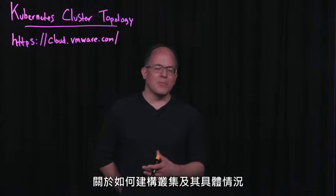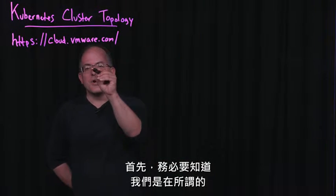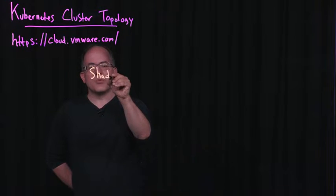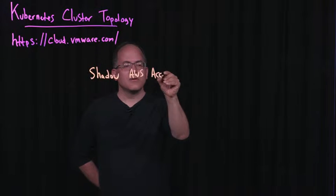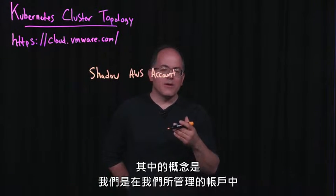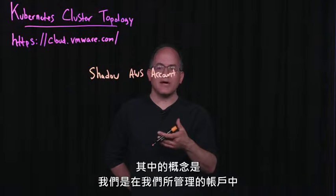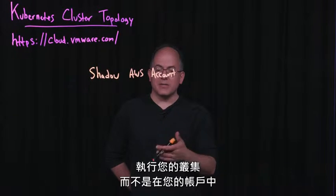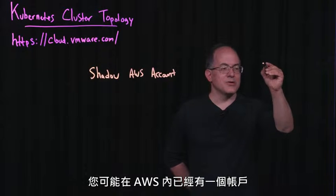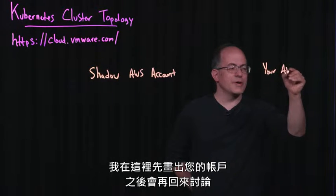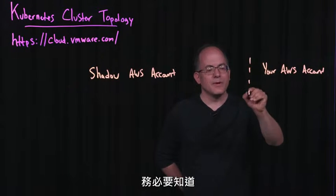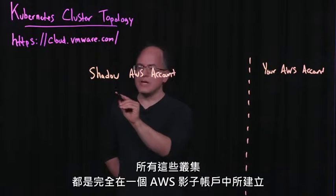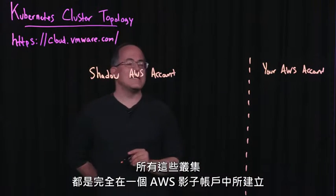There are a couple of important things to know about how we construct our clusters and what they look like. First of all, it's important to know that we create all of your clusters in what we call a shadow AWS account. The idea here is that we are running your clusters in an account that is managed by us — it's not in your account. You probably have an account too in AWS, so I'll draw your account over here and we'll come back to it later. Our clusters are created entirely within an AWS shadow account.